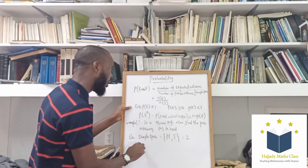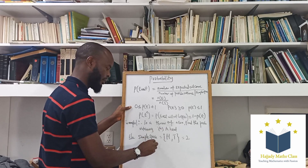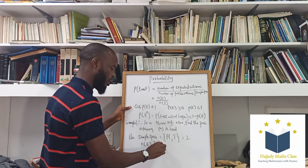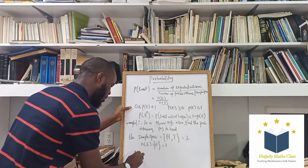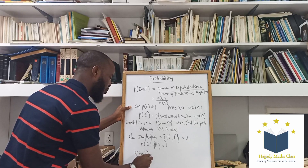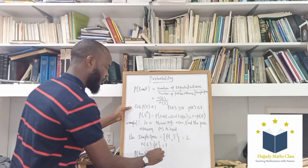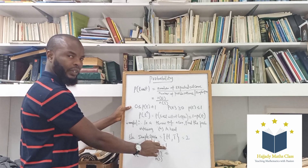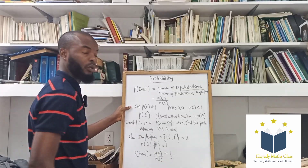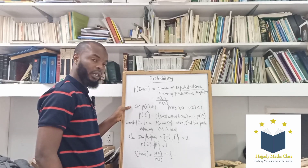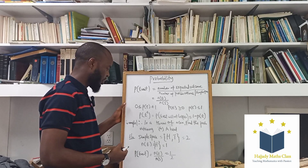Now, what was the question? We want to calculate the probability of obtaining heads. From the definition, probability equals number of expected outcomes over number of sample space. My sample space is H and T, so we have a total of two. The number of expected outcomes is heads — only one value. So the probability of the event is one over two, which equals 0.5.